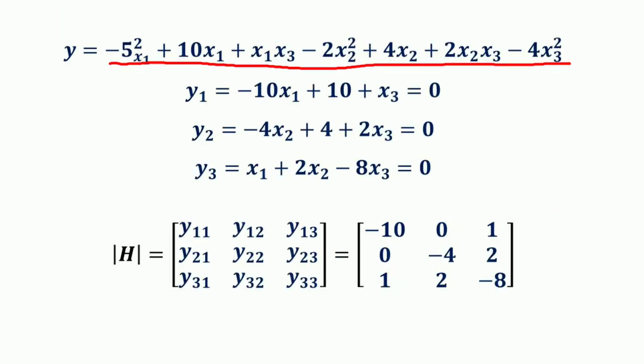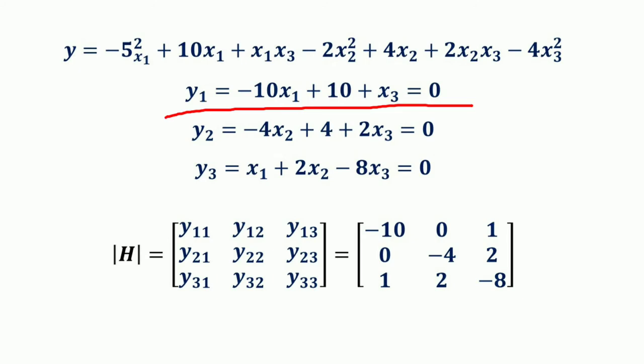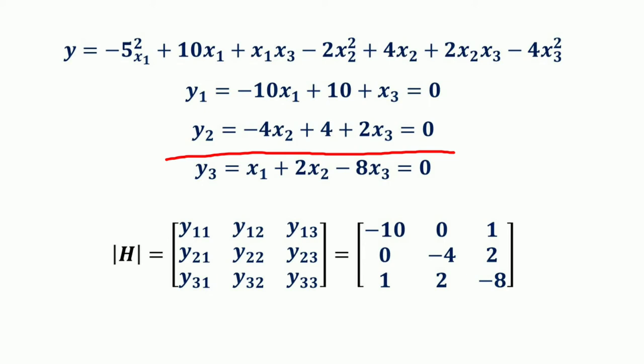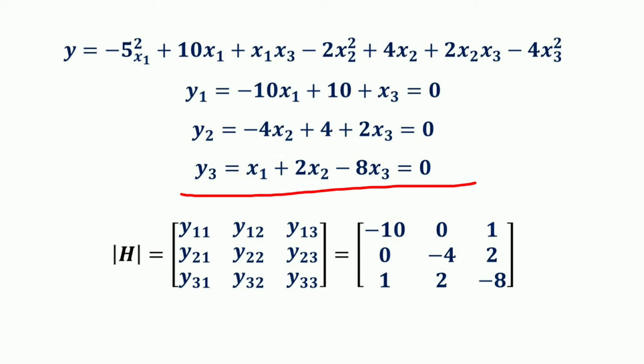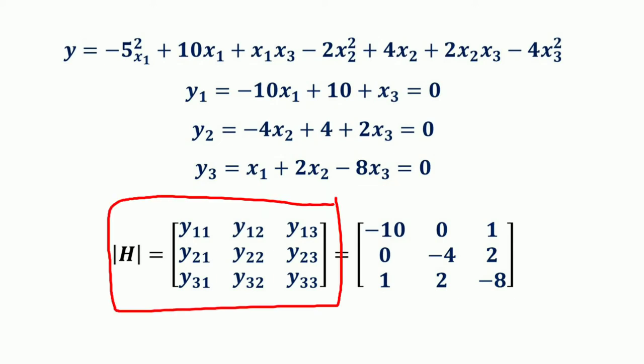For example, consider the function y = −5x1² + 10x1 + x1x3 − 2x2² + 4x2 + 2x2x3 − 4x3². We have three variables: x1, x2, and x3. Taking the first order partial derivative with respect to x1 gives −10x1 + 10 + x3 = 0; with respect to x2 gives −4x2 + 4 + 2x3 = 0; and with respect to x3 gives x1 + 2x2 − 8x3 = 0.